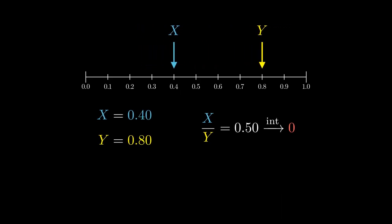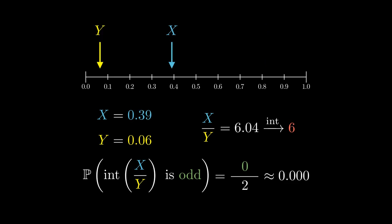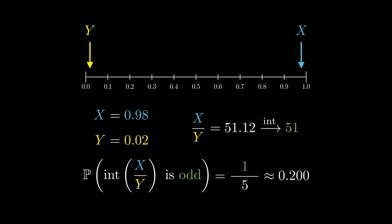What we are interested in is finding the probability that this number after rounding off is an odd number. For example, in this particular setup, we do not have an odd number. But in this setup, we obtain the number 51, which is an odd number.